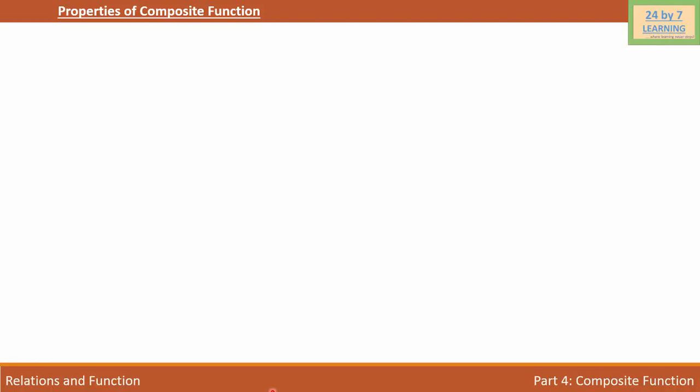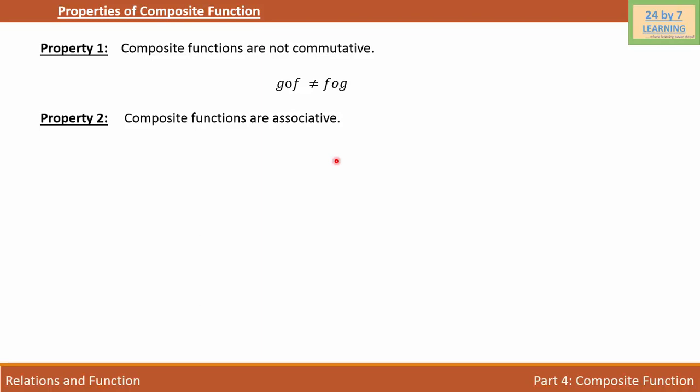Properties of composite function. First property: composite functions are not commutative. What does that mean? It simply means that if you find g of f, then it's not equal to f of g. Property 2: composite functions are associative.